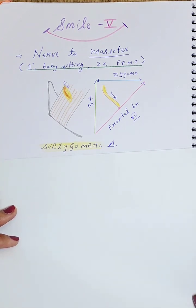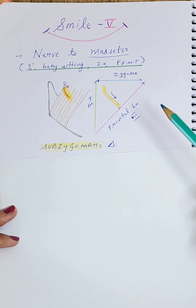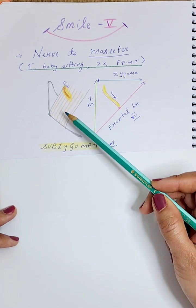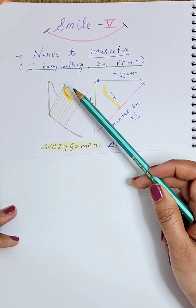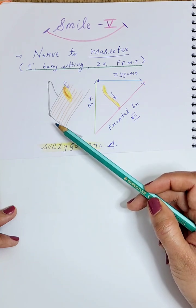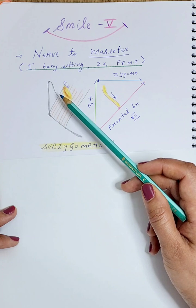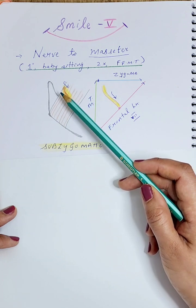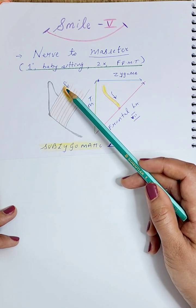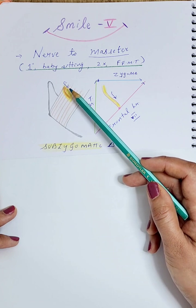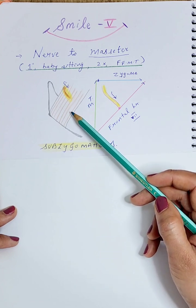A landmark known as the subzygomatic triangle has been identified. This is the masseter muscle found here, originating from the zygoma and inserting into the ramus of the mandible. At the level of the coronoid notch, you have the nerve to masseter coming.